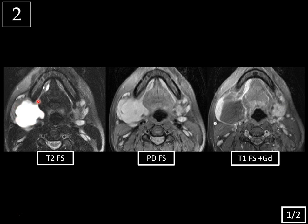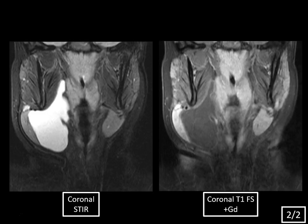Notice how this lobulated cystic mass actually has a thin communication with the sublingual space, and the cystic mass is not enhancing — it has some thin rim enhancement, but this enhancement you see here is the submandibular gland and the sublingual gland, respectively. So this is typical for a ranula, which is a retention cyst caused by sublingual gland duct obstruction. There are two types: a simple ranula, confined to the sublingual space above the mylohyoid muscle, and a diving or plunging ranula, which dives inferiorly into the submandibular space below the mylohyoid muscle. The fact that you see mass effect from the cystic mass against the submandibular gland tells us we're below the mylohyoid — this is a diving ranula, confirmed on the coronal images.